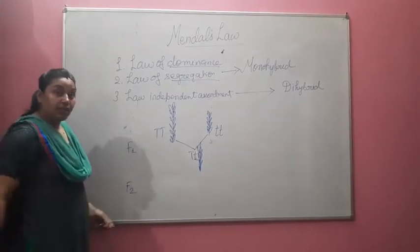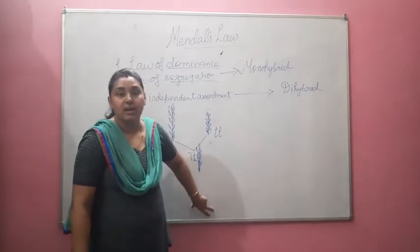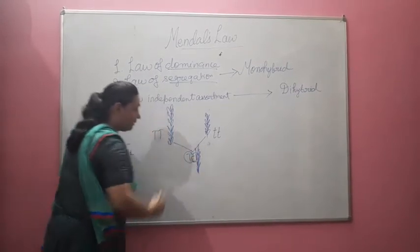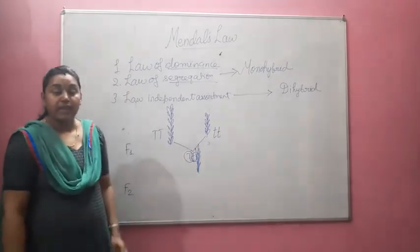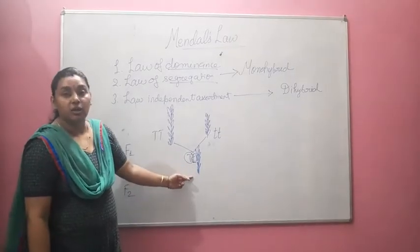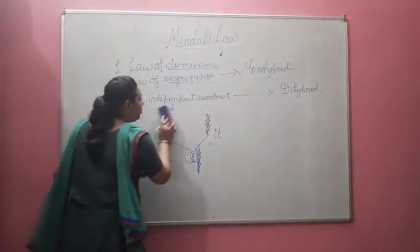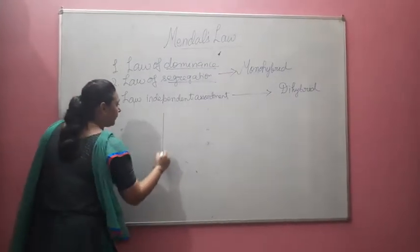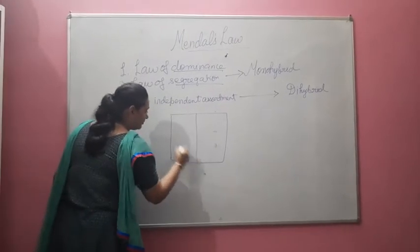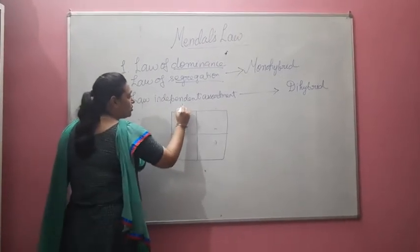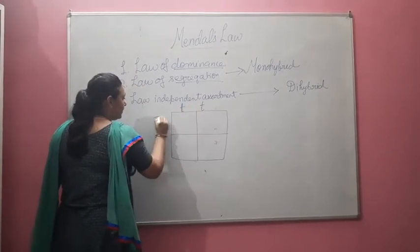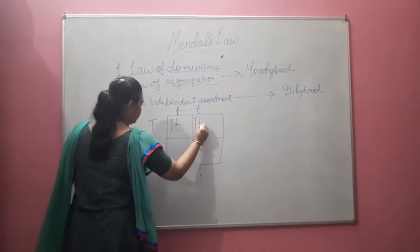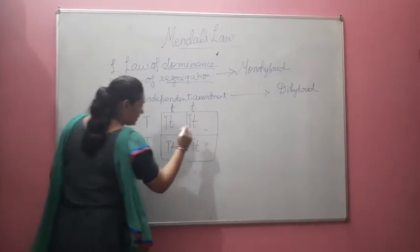In the F2 generation he found that some plants are tall and some are dwarf. When he did further study, he found that there are two gametes — one capital T and one small t — and out of these two, one is dominating and the other one is recessive. When you make a Punnett square for the F2 generation, you write small t and small t on one side, capital T and capital T on the other, and you find this kind of result.